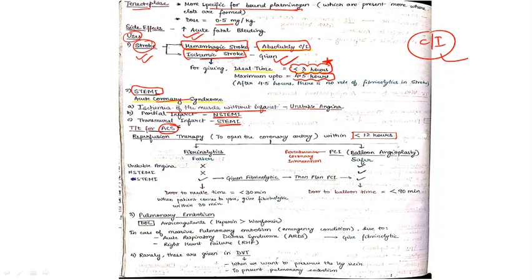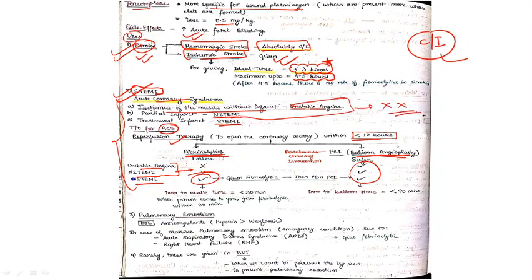We've discussed the treatment of ACS, acute coronary syndrome. We can provide reperfusion therapy within less than 2 hours. For that, we can give fibrinolytics and balloon angioplasty can be performed. In unstable angina and non-ST elevated MI, we should not give fibrinolytics. We can do angioplasty in all three conditions, and in STEMI we can go for fibrinolytics.